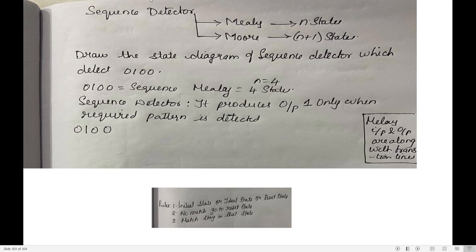Good morning students. Let us look into the next topic — a very important topic called sequence detector. This is a short question you will definitely get in exams. The question will be like: draw the state diagram of a sequence detector which detects sequence 0100. You can design the sequence detector either in Mealy approach or Moore method. For Mealy method you need n states; for Moore method you need n plus one states.